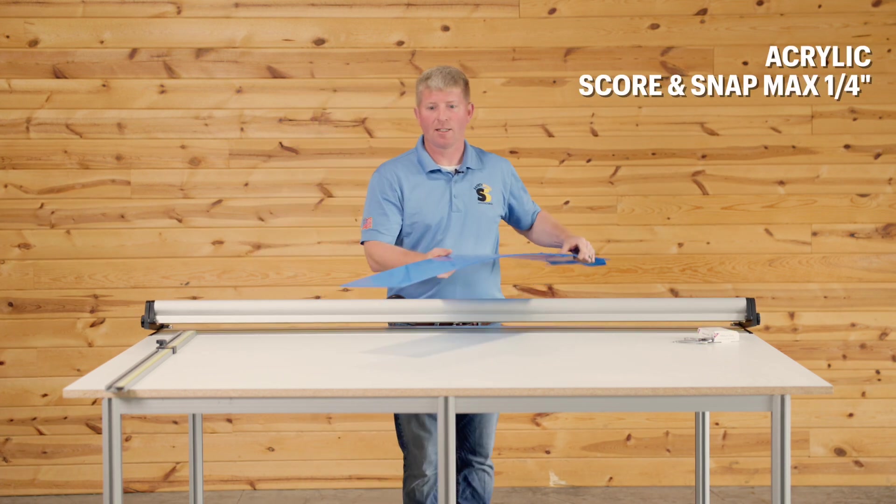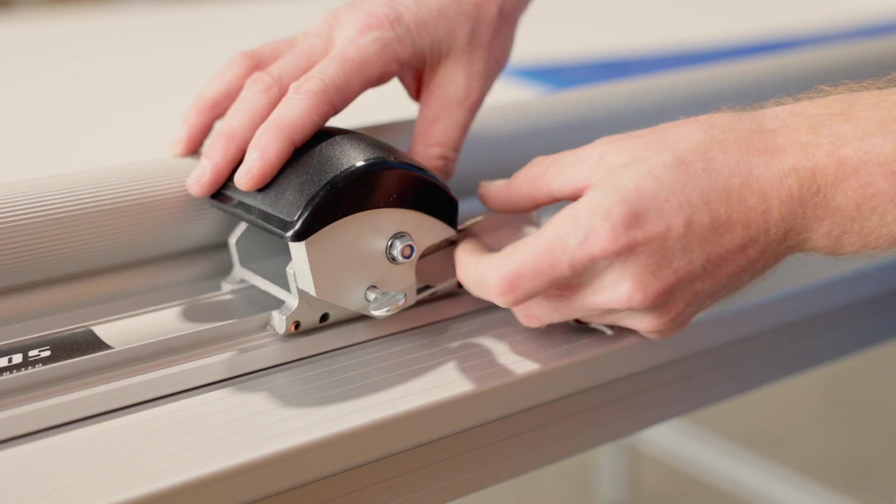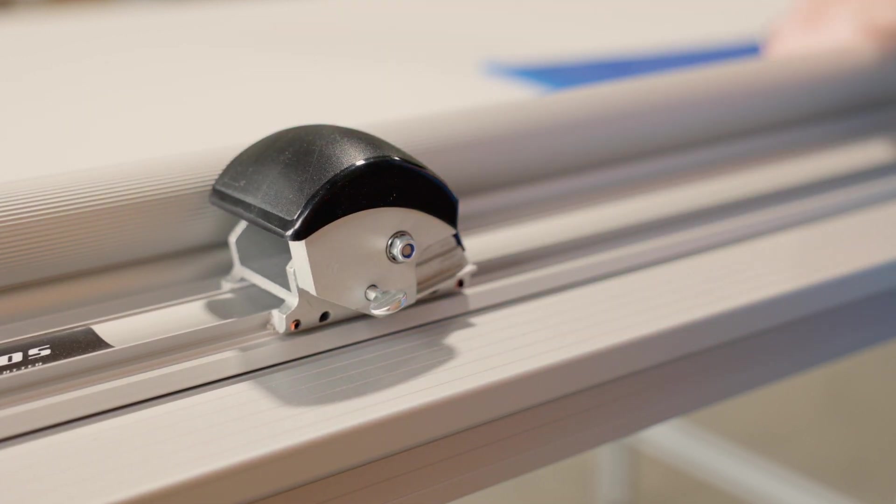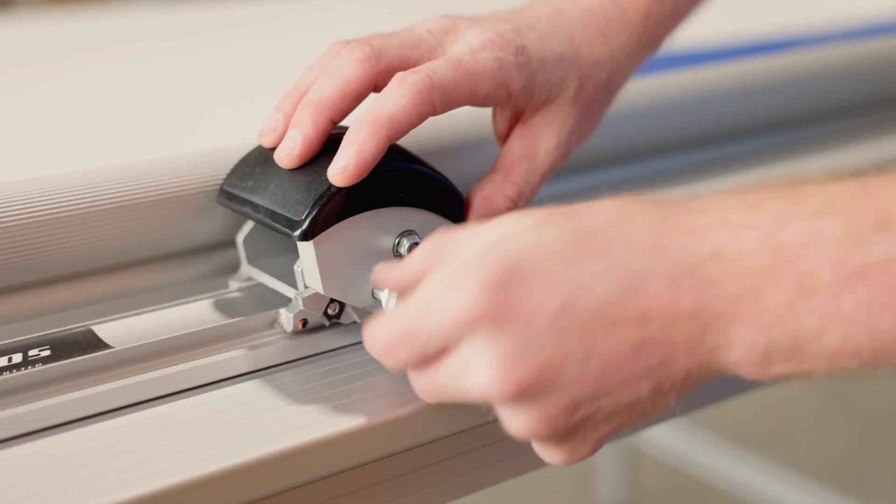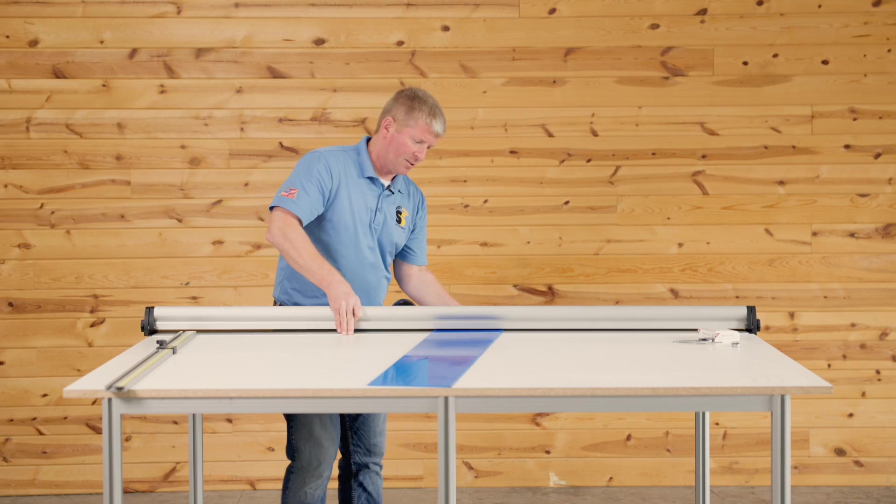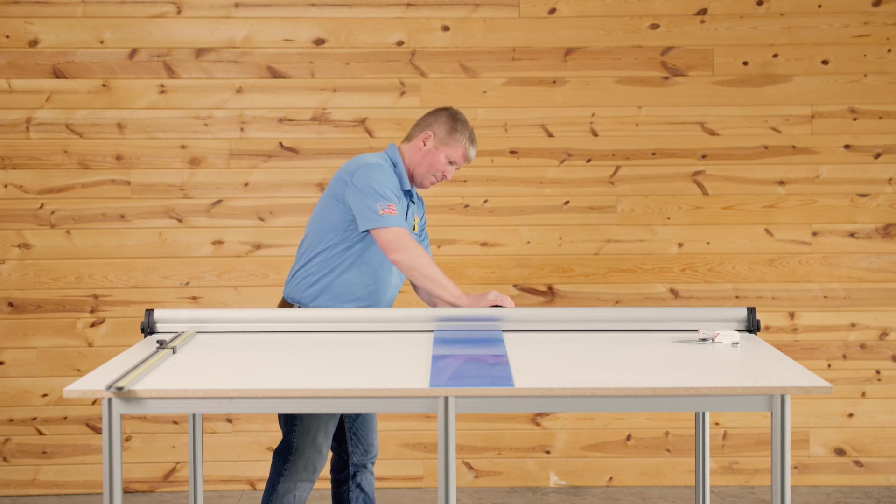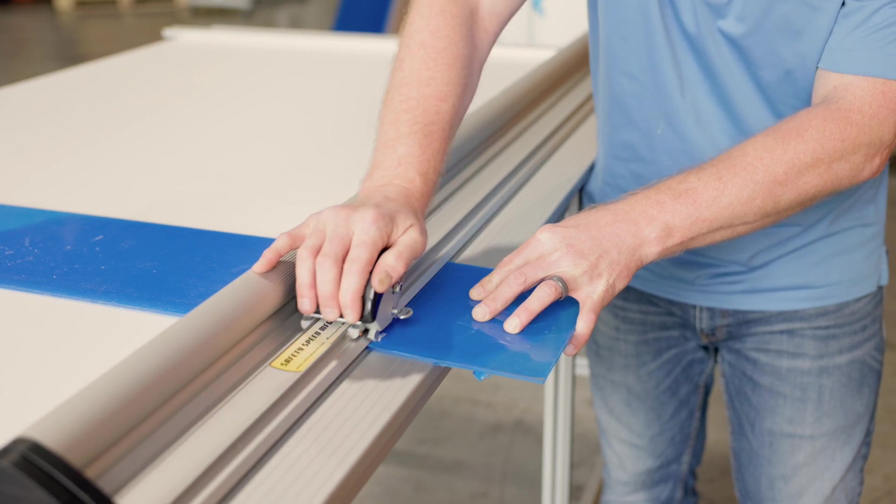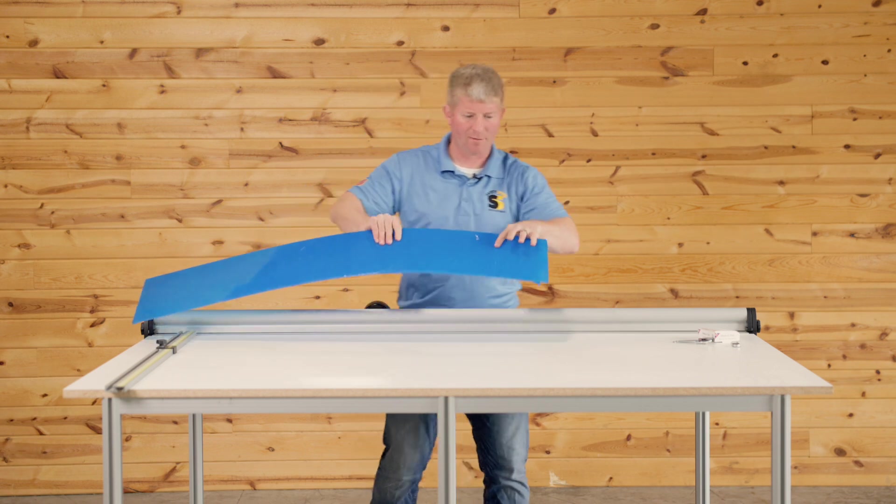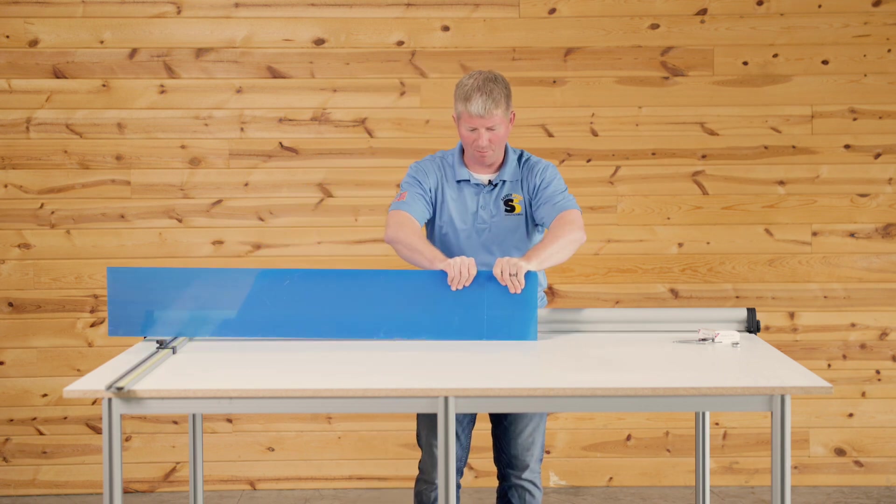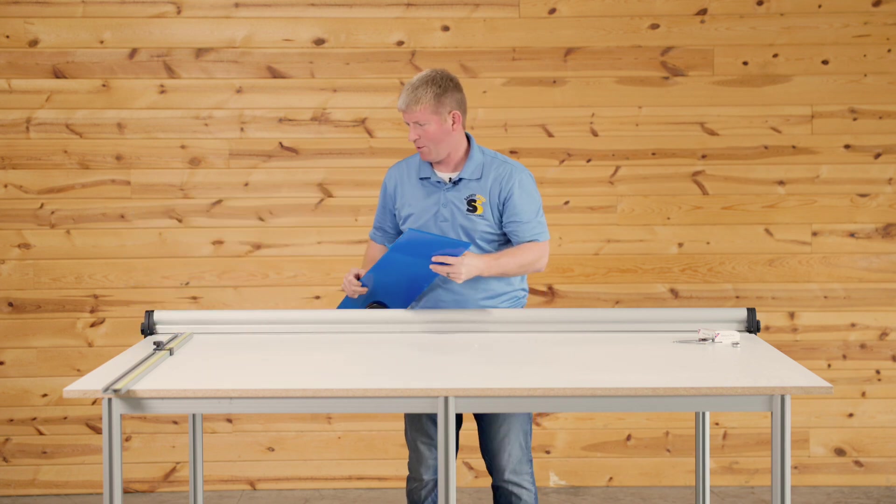So now I've got some acrylic here. I'm going to switch the blade. Loosen this holder, move that. And that's the acrylic scoring blade here. Put that in. And you can score and snap up to a quarter inch acrylic. And then to snap, I've got the scored on the surface there. Put my thumbs behind and then pop that. Nice smooth edge.